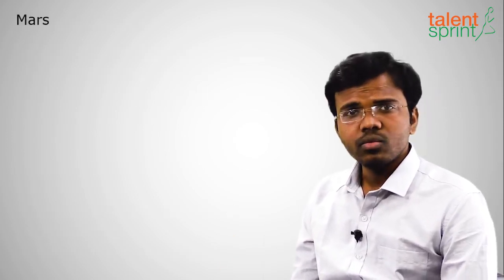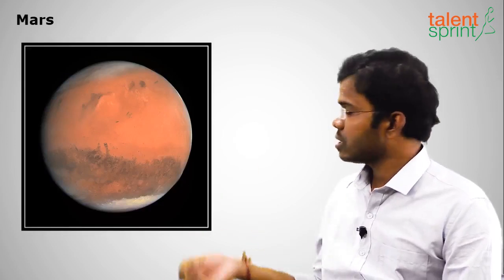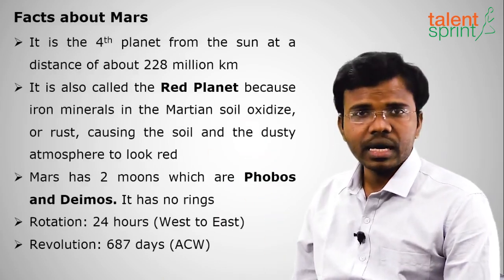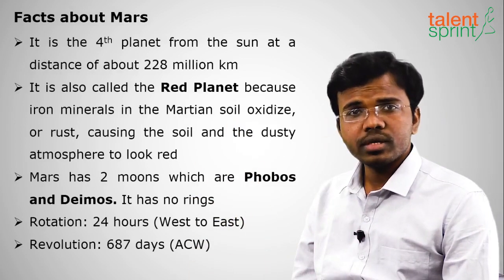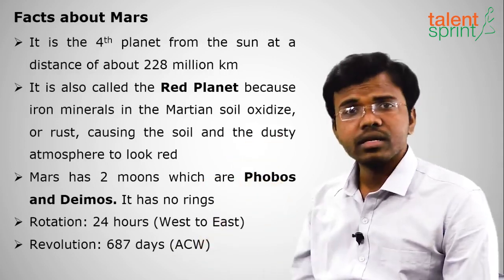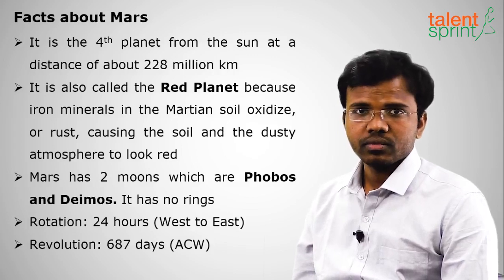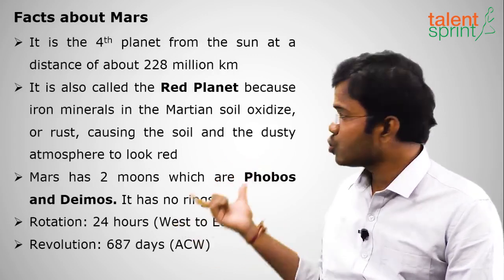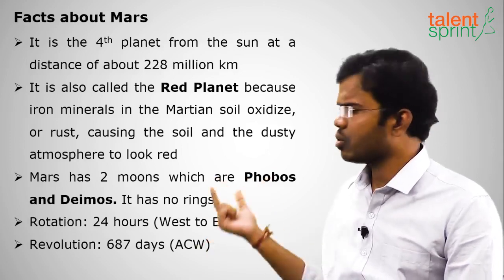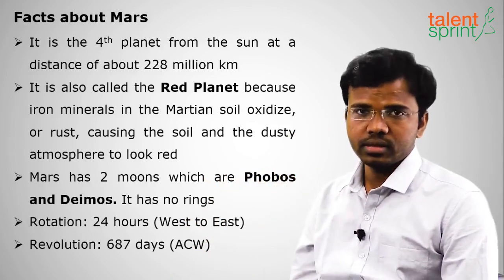Moving on to Mars, the fourth closest planet from the sun and the last of the inner or terrestrial planets. Mars is at a distance of about 228 million kilometers from the sun. It is called the Red Planet because its surface is dominated by iron. Mars has two moons called Phobos and Deimos — a very frequently asked question. Like Earth, Venus, and Mercury, Mars has no rings.